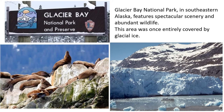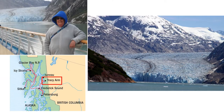Glacier Bay National Park in southeastern Alaska features spectacular scenery and abundant wildlife. This area was once entirely covered by glacial ice. If you are wondering who that person in the upper left corner is — yes, that is me, all bundled up on a cruise ship. Behind me is Tracy Arm Fjord, which is part of Glacier Bay. Those are not tire tracks that you see — those are areas that have been melted away by global warming. This again was once all glacial ice.